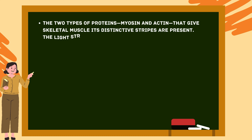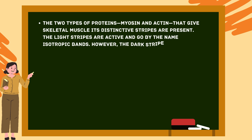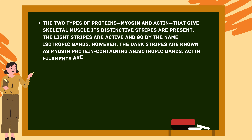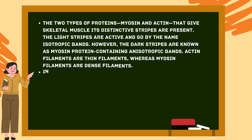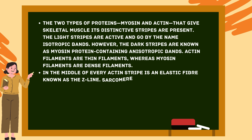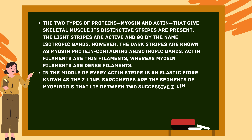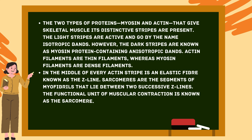The light stripes are actin-containing bands known as isotropic bands, while the dark stripes are myosin protein-containing anisotropic bands. Actin filaments are thin filaments, whereas myosin filaments are dense filaments. In the middle of every actin stripe is an elastic fiber known as the Z-line. Sarcomeres are the segments of myofibrils that lie between two successive Z-lines, and the sarcomere is the functional unit of muscular contraction.